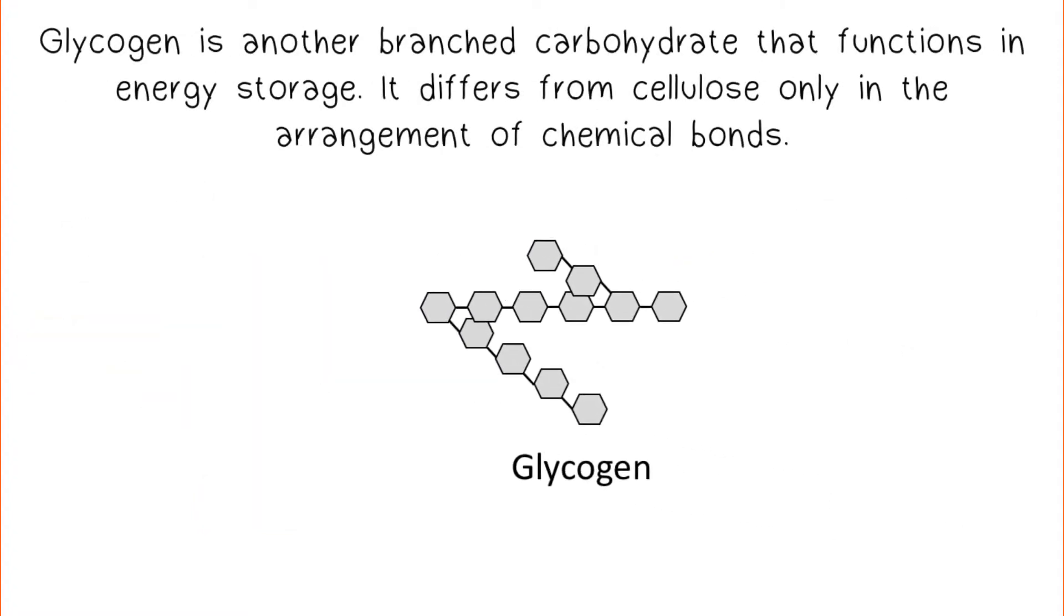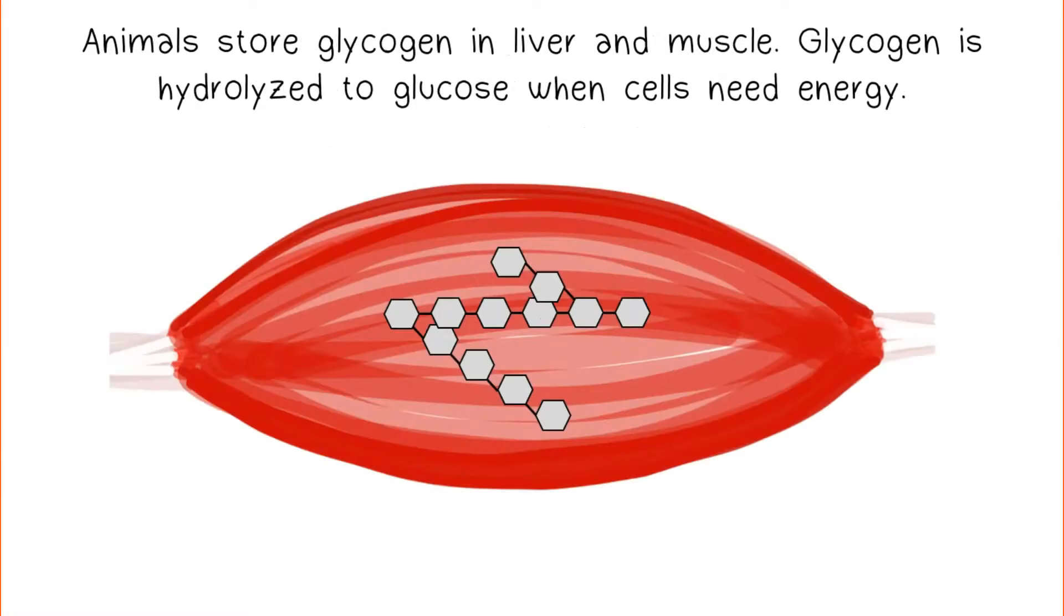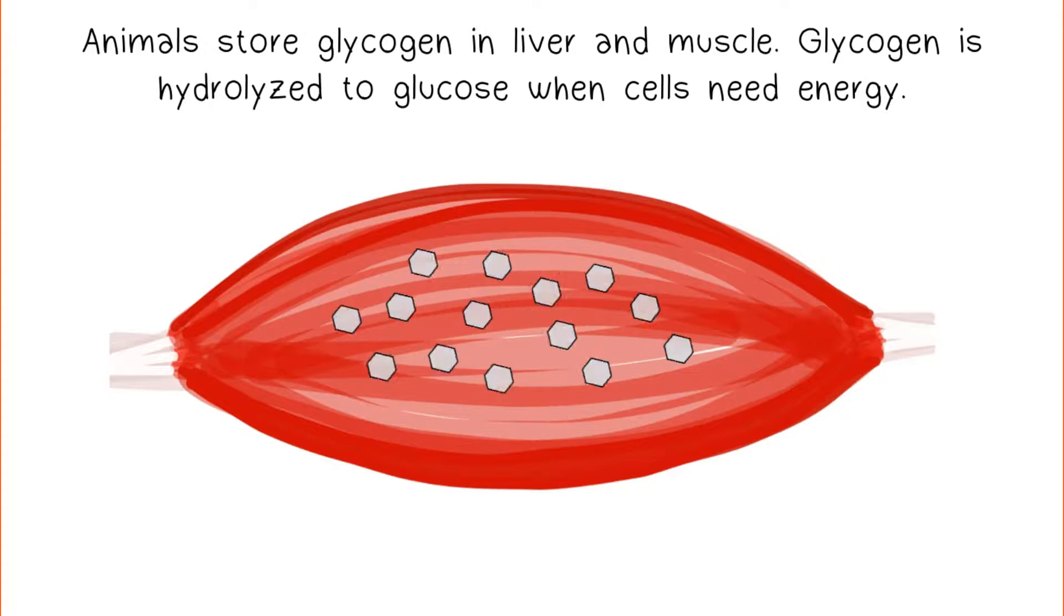Glycogen is another branched carbohydrate that functions in energy storage. It differs from cellulose only in the arrangement of chemical bonds. Animals store glycogen in liver and muscle. Glycogen is hydrolyzed to glucose when cells need energy.